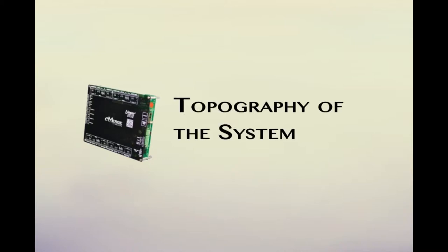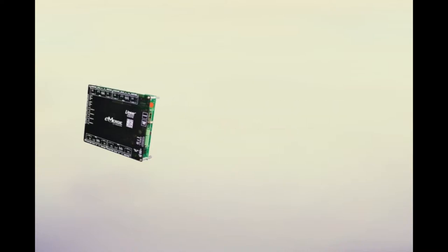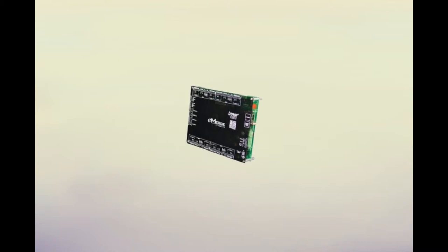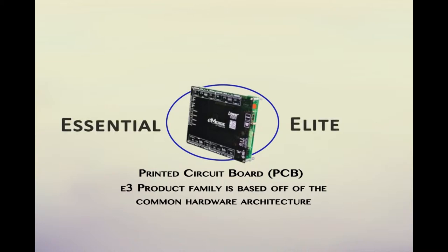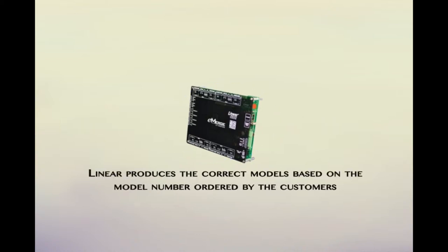Understanding the architecture will help lead you to the correct model number during the ordering process. Let's begin with the PCB module. PCB stands for Printed Circuit Board. The E3 product family is based on a common hardware architecture, so all the different models available utilize the same PCB module. This common module allows Linear to produce a variety of different items, SKUs, or models to meet our customers' needs. Linear produces the correct models based on the model number ordered by our customers.